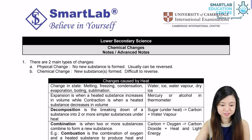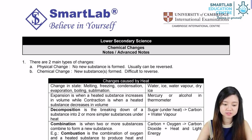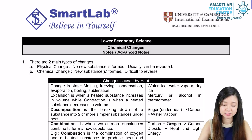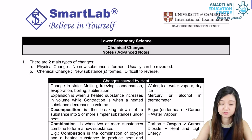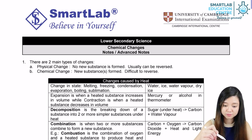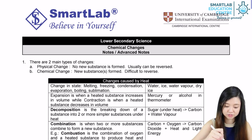Let's discuss chemical changes today. There are two main types of changes: physical change and chemical change. For physical change, there's no new substance being formed, and it usually can be reversed, as it only involves changes in states. But for chemical change, it results from a chemical reaction, so new substances are actually formed, and it's very difficult to reverse.